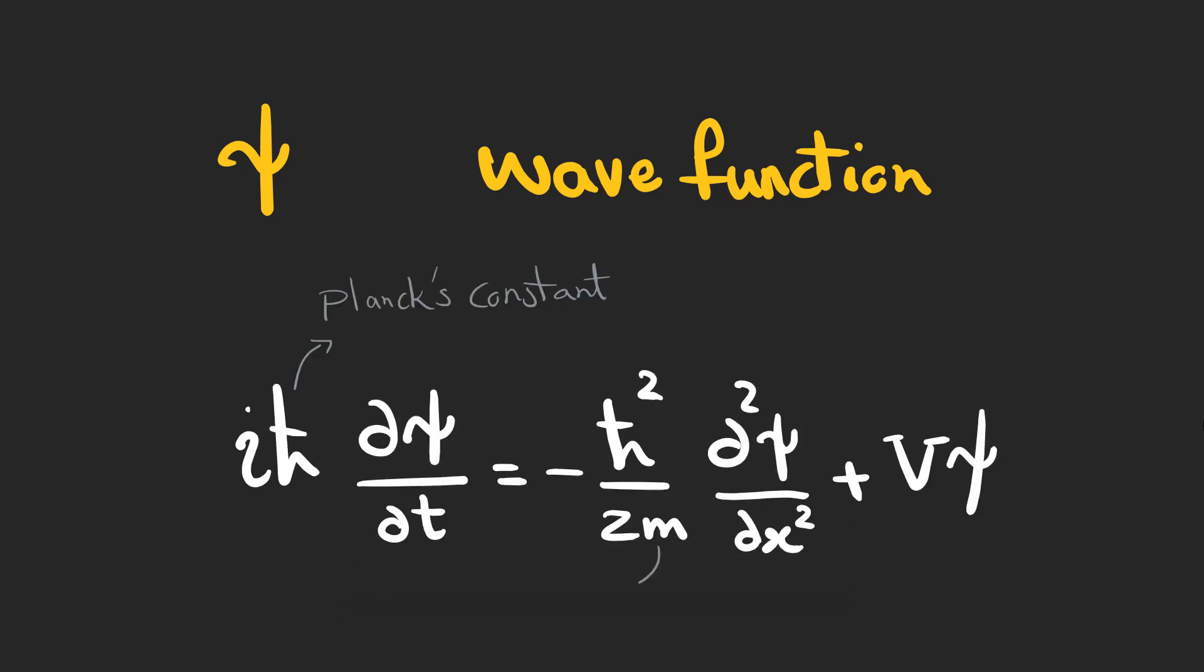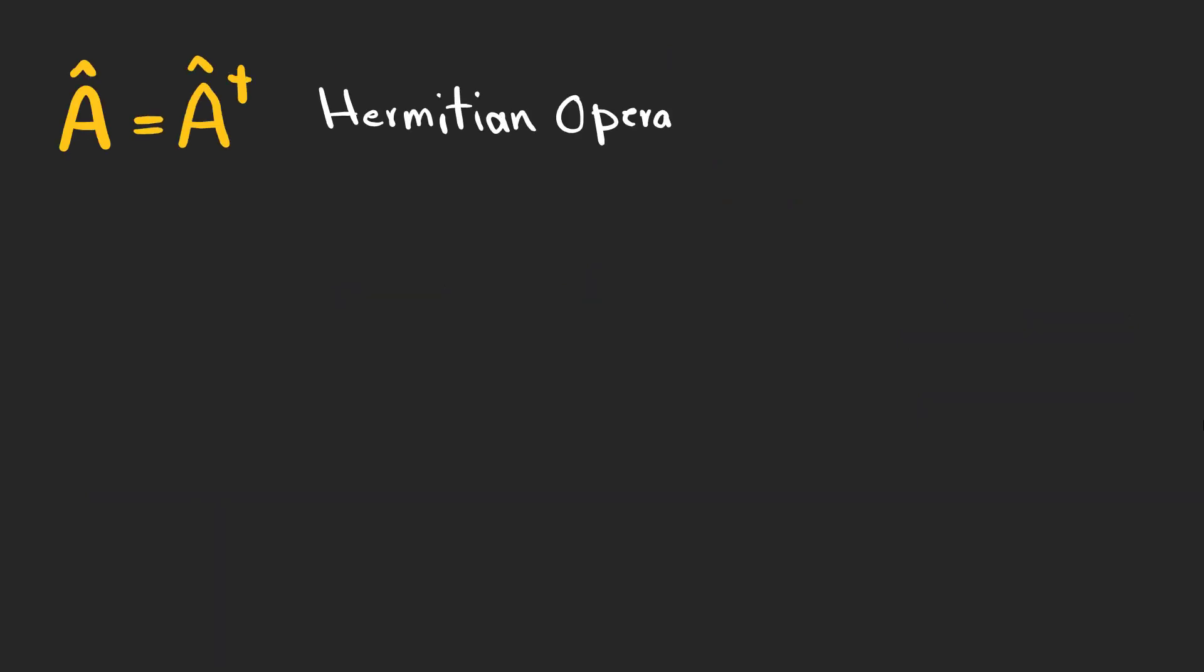This wave function is governed by a famous equation called the Schrödinger equation and lives in a space called Hilbert space. In this space, we can also define some Hermitian operators that act on our wave functions.